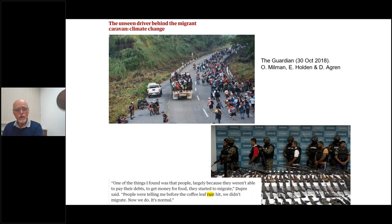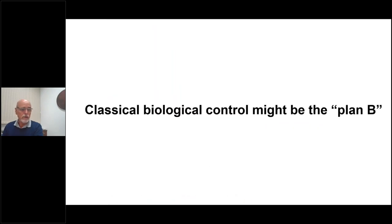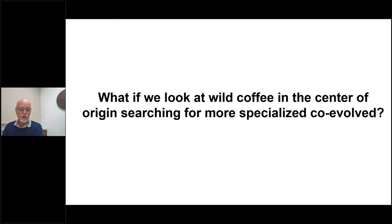Several organizations — governmental and NGOs — started moving to find alternatives. There was clearly a need for Plan B, and we suggested that classical biocontrol might be this Plan B. We thought that perhaps if you look at wild coffee in the centre of origin, you could find specialized co-evolved natural enemies — in our case microparasites and fungi growing within coffee as bodyguards against rust.